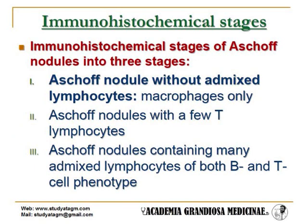Three immunohistochemical stages of Ashoff nodules: Stage 1 — Ashoff nodule without admixed lymphocytes; only macrophages are seen. Stage 2 — Ashoff nodules with a few T lymphocytes. Stage 3 — Ashoff nodules containing many admixed lymphocytes of both B and T cell phenotypes.